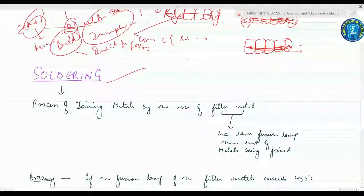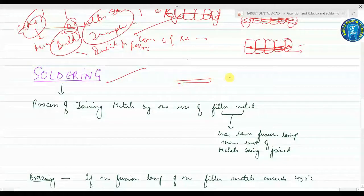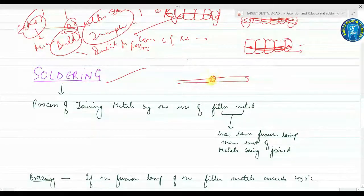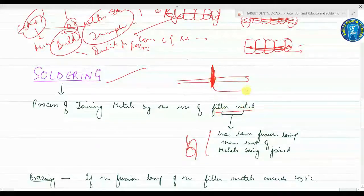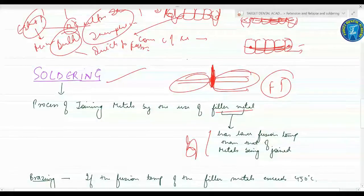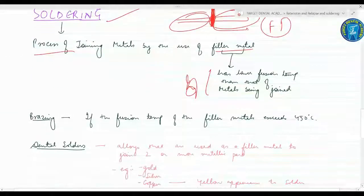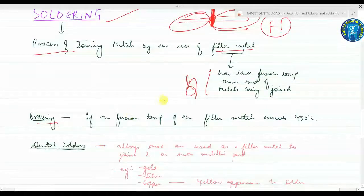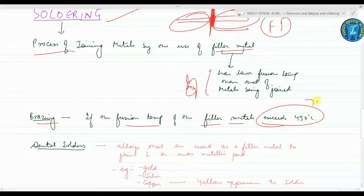This is all about retention and relapse. Now starting with the next topic - soldering. Soldering means the joining of two metals with the help of a third metal, the filler metal. Very important point for your MCQ: the filler metal has a lower fusion temperature than the two metals being joined. Second is brazing - if the fusion temperature of the filler material exceeds above 450 degrees, it is called brazing.